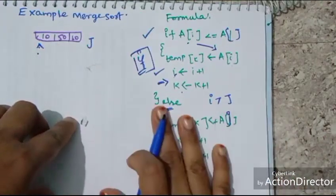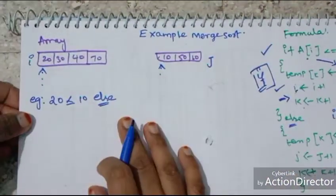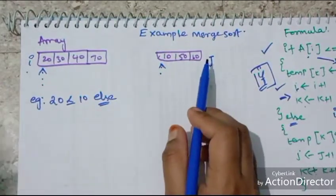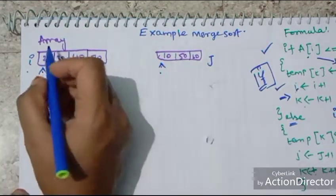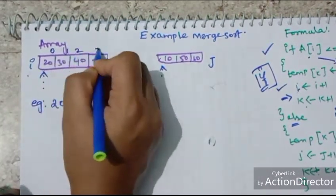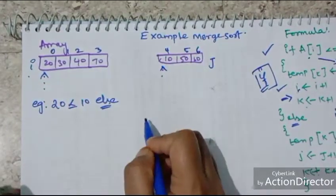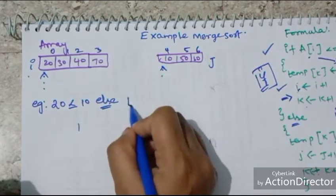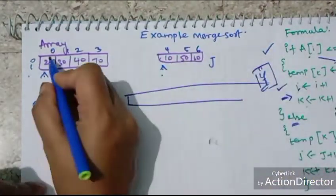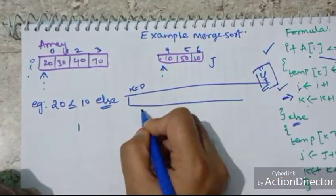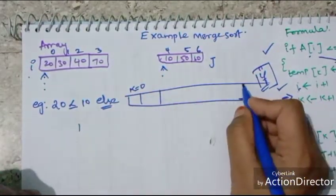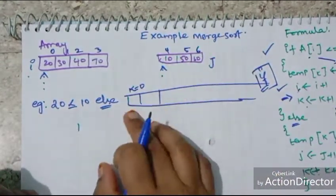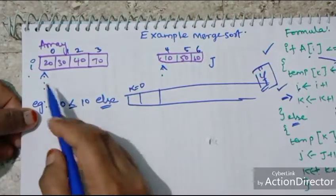Let's check the first condition. I value is 20 and J value is 60. The array index is 0, 1, 2, 3, 4, 5, 6. The initial value of K is 0. We are going to substitute the K value to fill this array list in order using this merge sort algorithm.